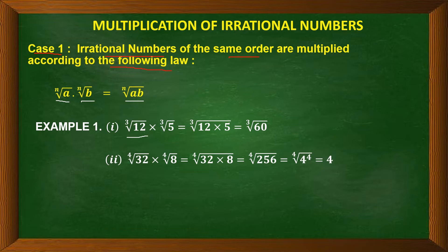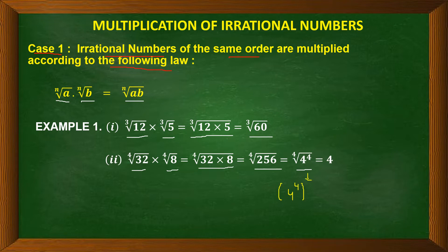For example, if we have cube root of 12 into cube root of 5, we find the product of 12 into 5 under the cube root, so cube root of 12 into 5, which is equal to cube root of 60. Another example: fourth root of 32 into fourth root of 8. Find the product of 32 and 8, so fourth root of 32 into 8, which is equal to fourth root of 256. 256 can further be simplified and written as 4 raised to power 4, and fourth root of 4 raised to power 4 is 4. In exponential form it is 4 raised to power 4 in bracket 1 by 4, and 4 and 4 will get cancelled, leaving us with 4. So, answer is 4.